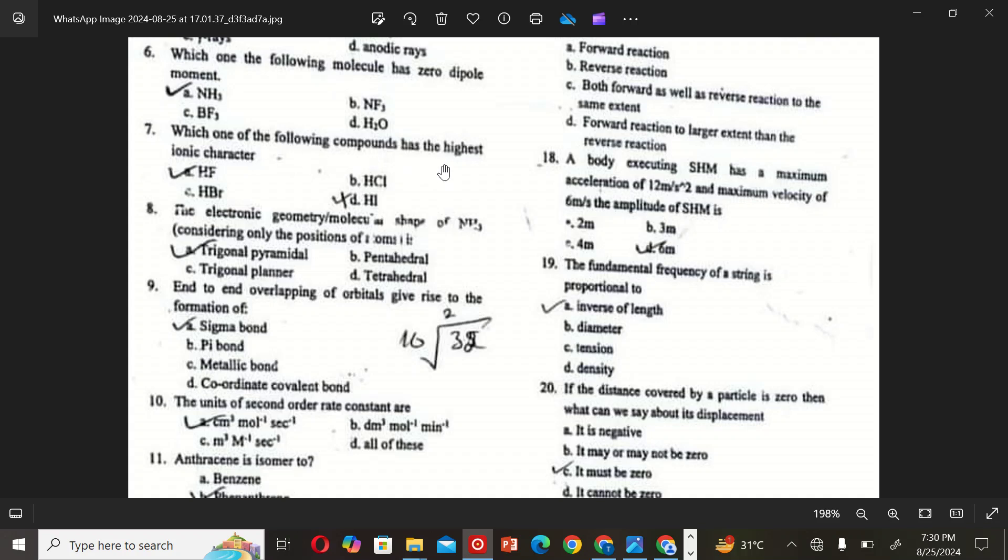Which one of the following compounds has the highest ionic character? A: HF, B: HCl, C: HBr, and D: HI. So the correct option is A, HF.